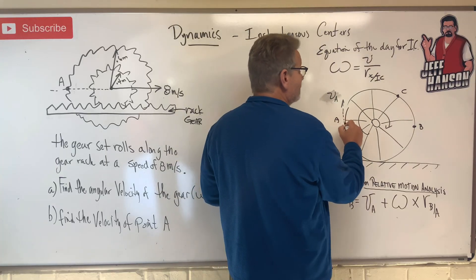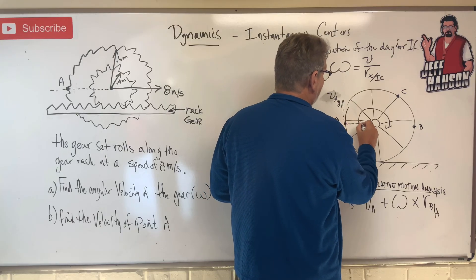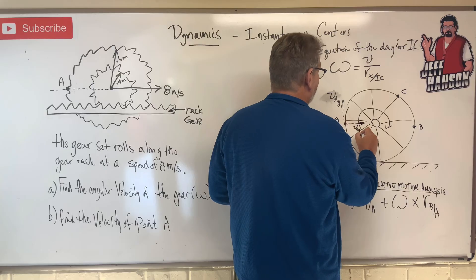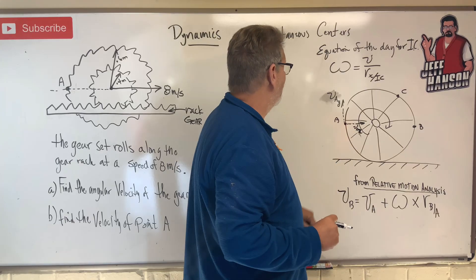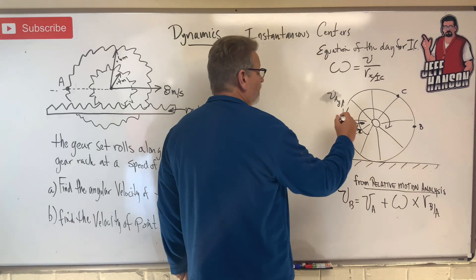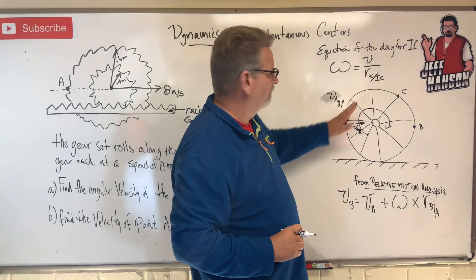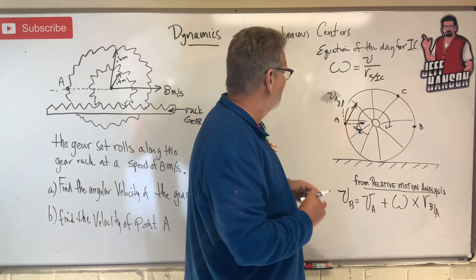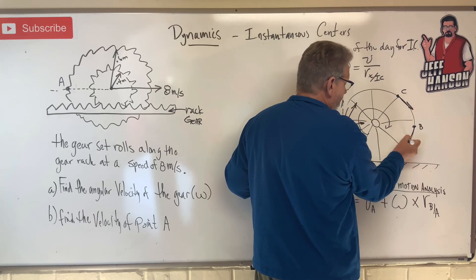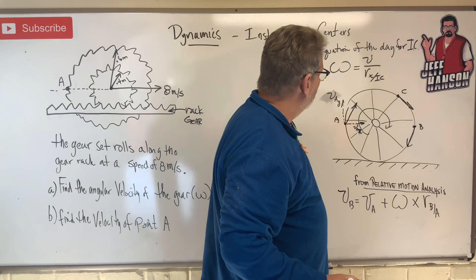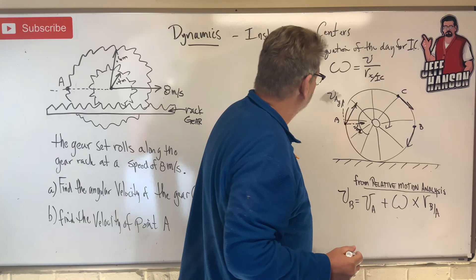A actually has an up component - we'll call that y - but it also has a velocity in the x direction. So the velocity is actually over here, because A is about to be over here. C's velocity is going this way, B's velocity is going this way. And if we were to draw a perpendicular line from those velocity vectors, where would that go?